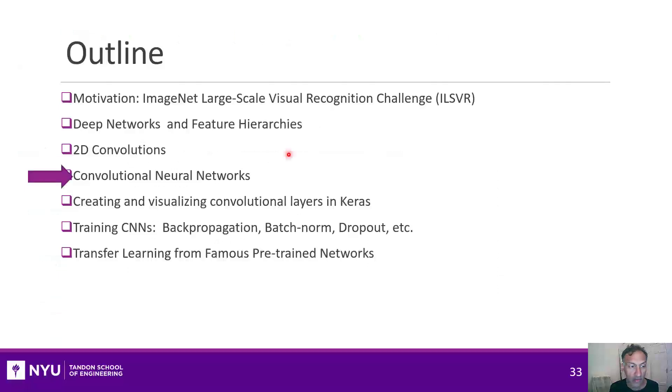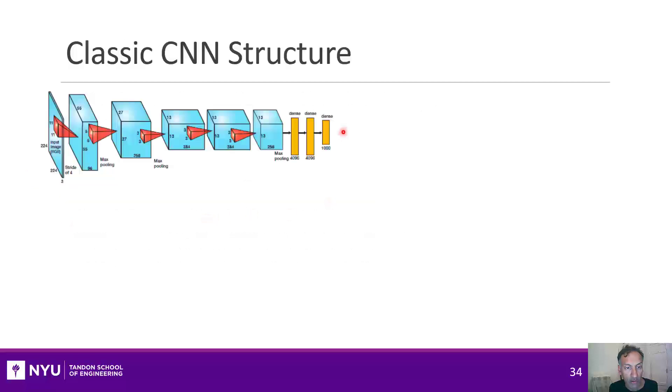Okay, so in this section I want to start with talking a little about the structure of typical convolutional neural networks. So let's start with a picture of AlexNet, which is this eight-layer neural network.